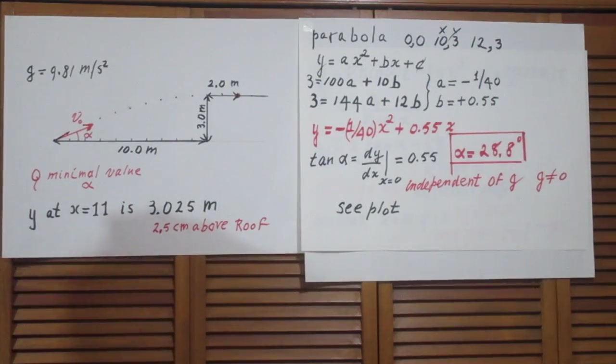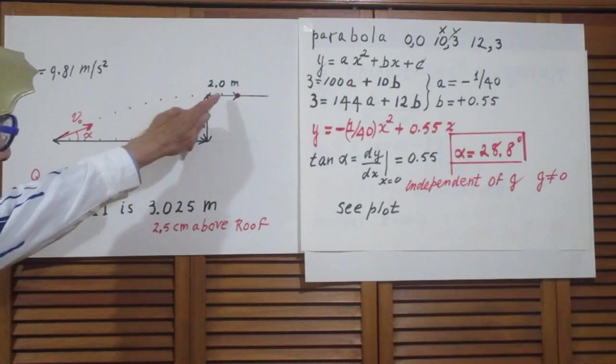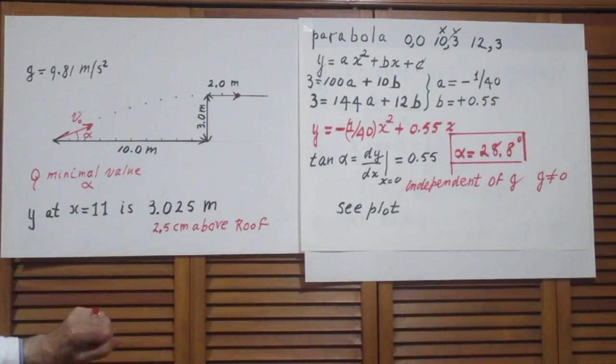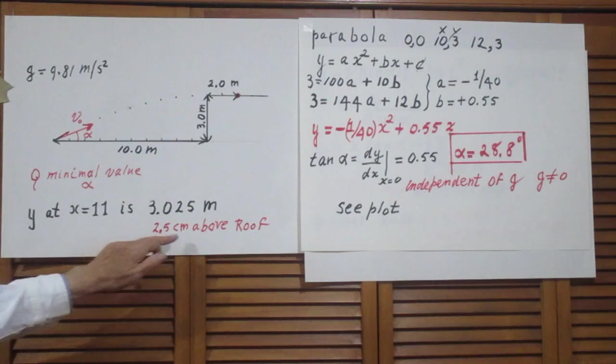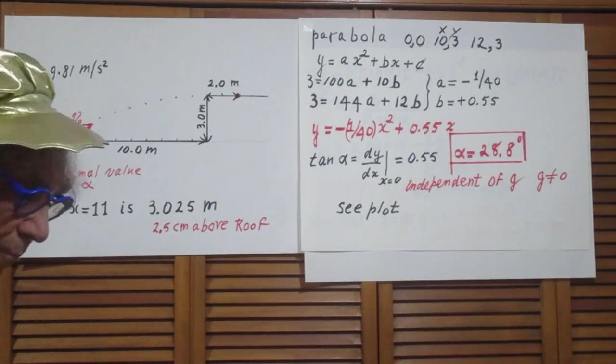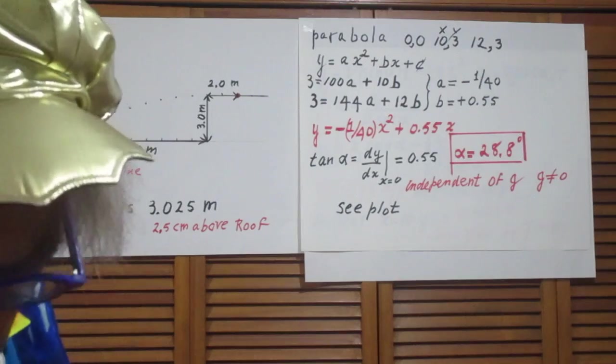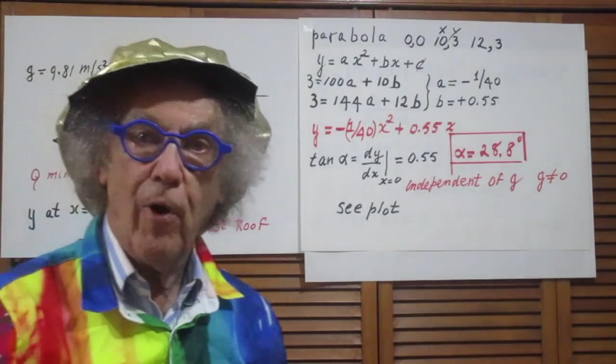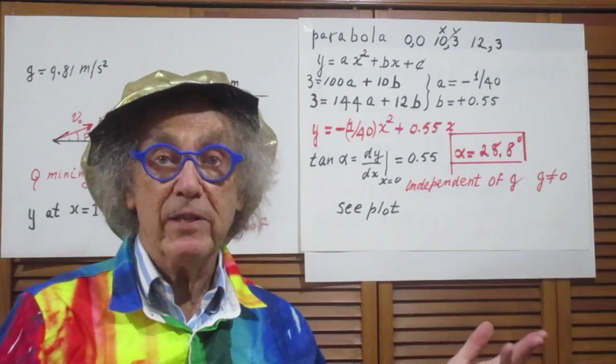And at x equals 11, that y point, I plotted it to scale so you can hardly see it, is only 2.5 centimeters above the roof. All right, so to calculate the minimum value for alpha, I would say it's trivial.